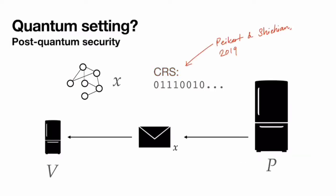There's also the question of what happens in the quantum setting. The first thing to consider is post-quantum security, where the verifier is now allowed to be a potentially cheating quantum device. The prover was unbounded anyway, but if the verifier is quantum, can we still make the protocols zero-knowledge? The answer is yes — it's known to be possible in the CRS model under LWE (learning with errors), proven in 2019.